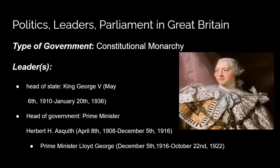Leading up to the war, Great Britain was a constitutional monarchy. The king was King George V, from 1910 to 1936. The head of government was Prime Minister Herbert Henry Asquith from 1908 to 1916, who was then replaced by Prime Minister Lloyd George from 1916 to 1922.